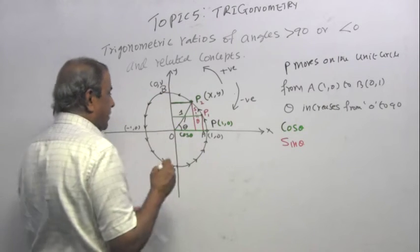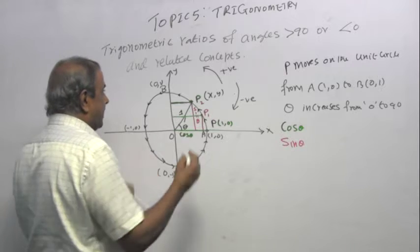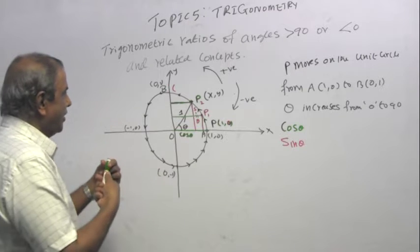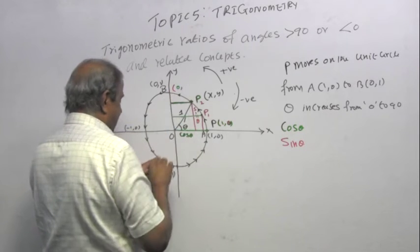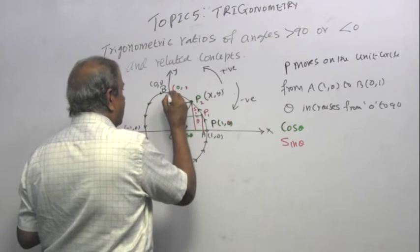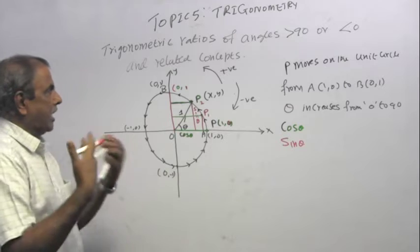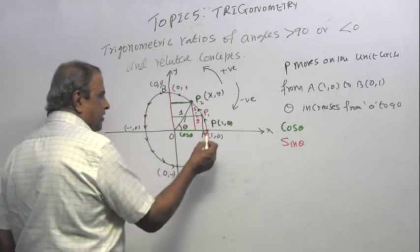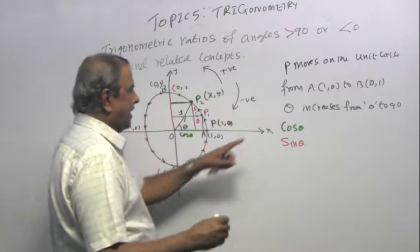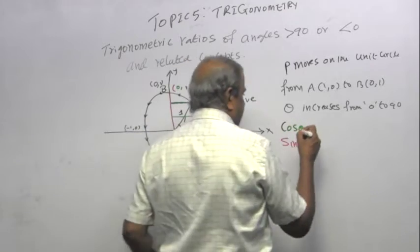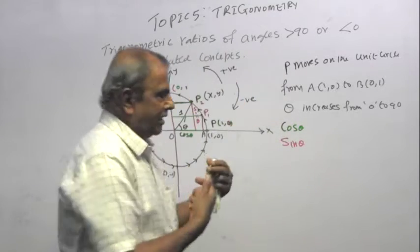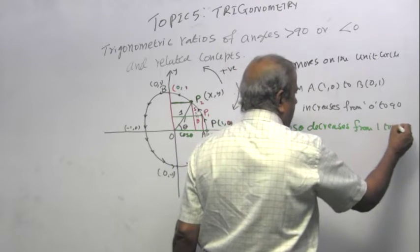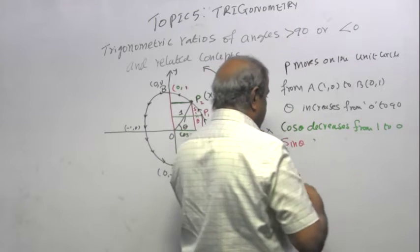What happens when you reach point B? At A, cos is 1 and sin is 0. At B, cos is 0 and sin is 1, because the vertical displacement is 1. So we can conclude: as theta increases from 0 to 90 degrees, cos theta decreases from 1 to 0, and sin theta increases from 0 to 1.